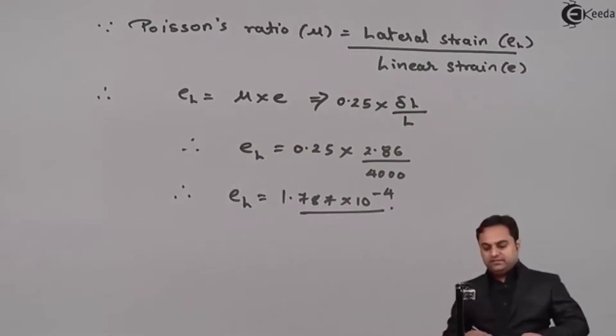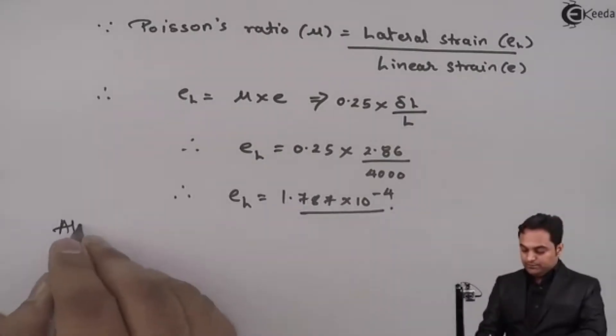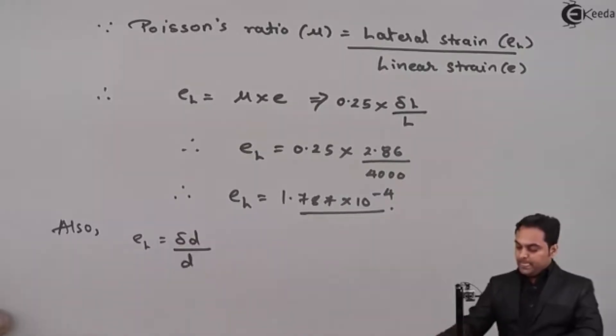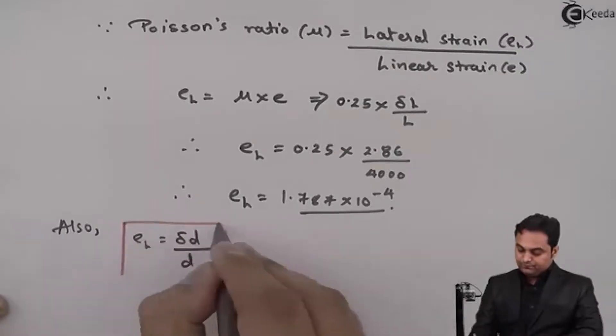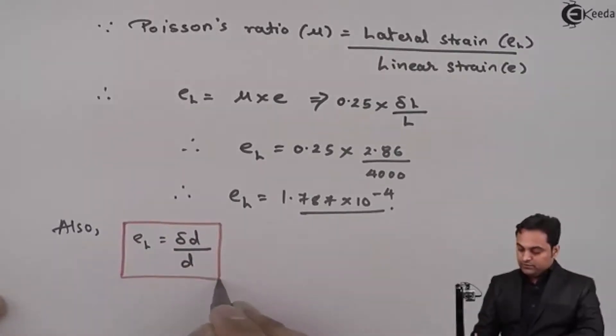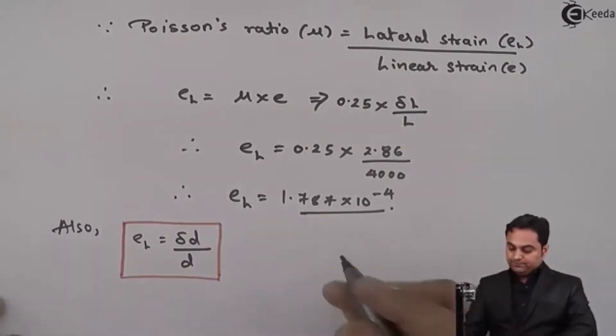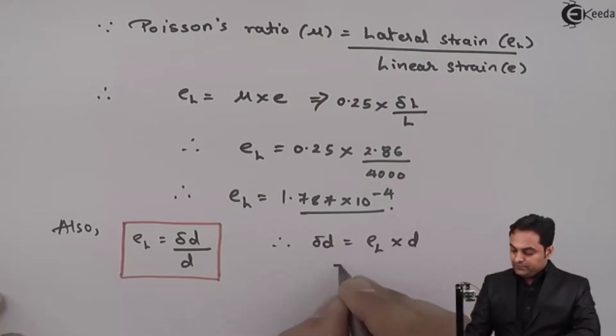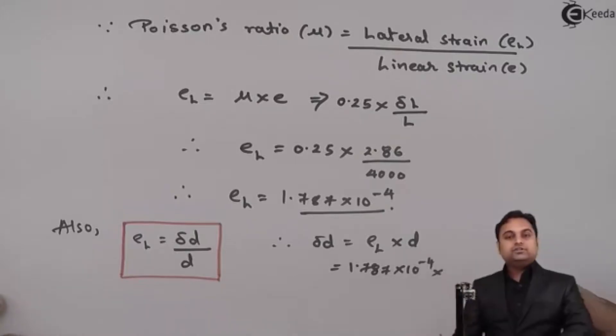Now after getting the lateral strain I can say that lateral strain is equal to change in diameter upon the original diameter. So therefore change in diameter will be lateral strain into original diameter. So that is 1.787 × 10⁻⁴ into the original diameter which is 20 mm, giving 3.575 × 10⁻³ mm.